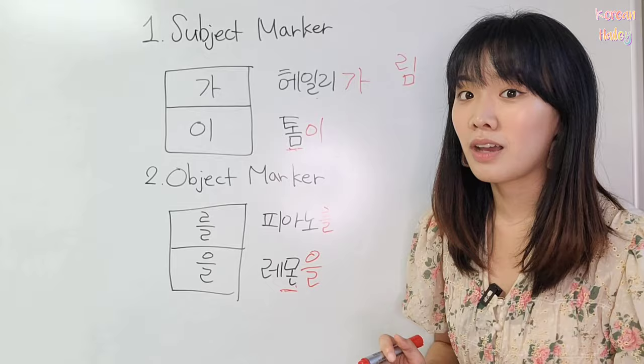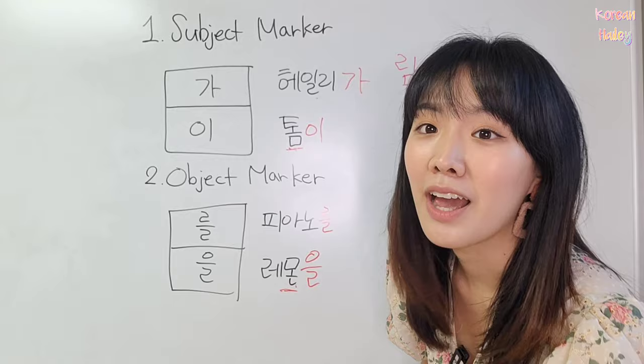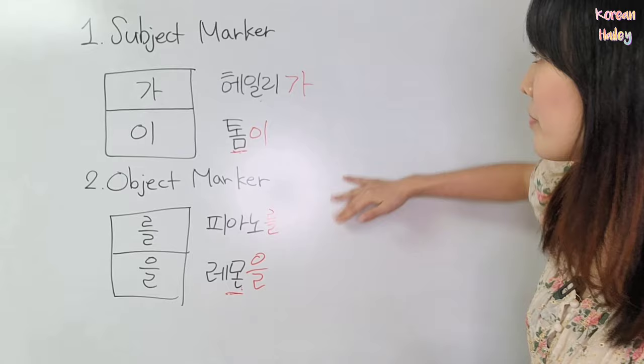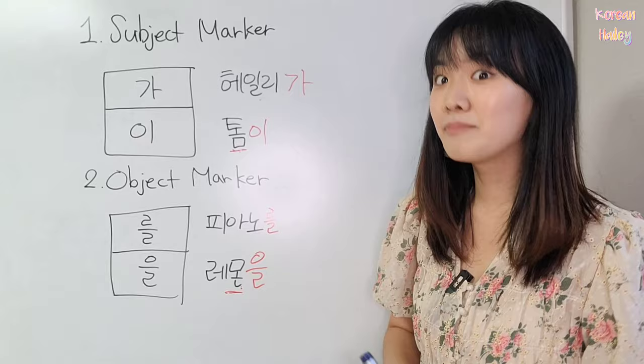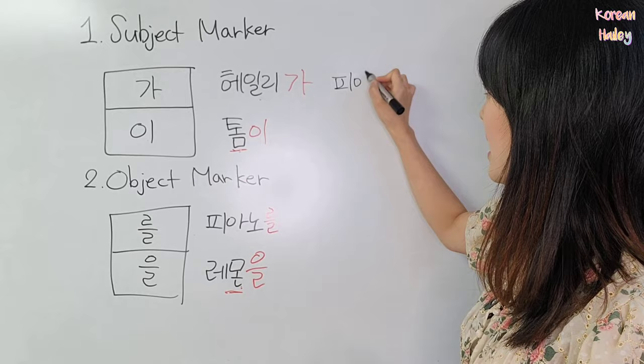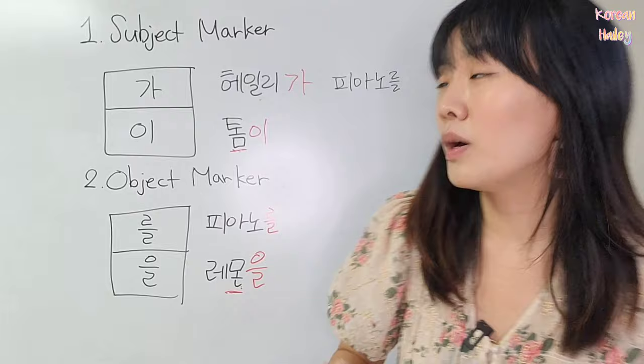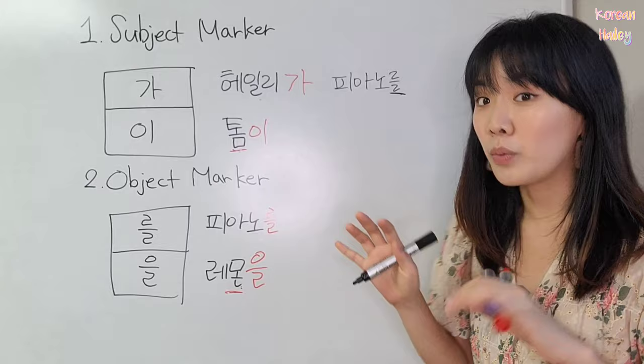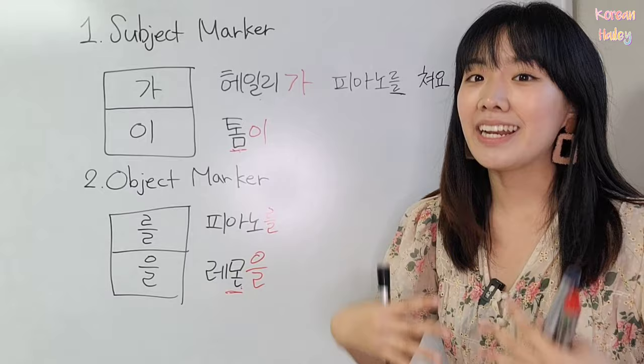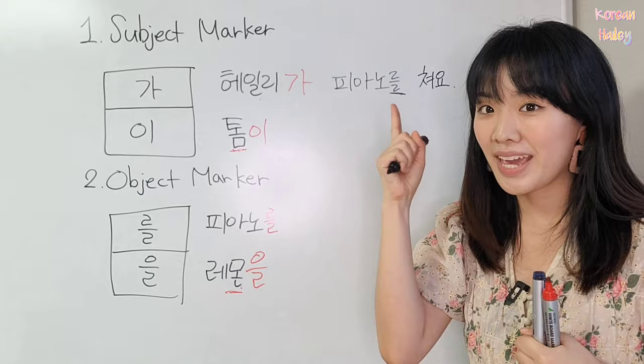Now let's make sentences. I want to say 'Hailey plays the piano.' So: 헤이리가 피아노를, and then 'plays' is 쳐요. It becomes 헤이리가 피아노를 쳐요. 'Hailey plays the piano' is 헤이리가 피아노를 쳐요.